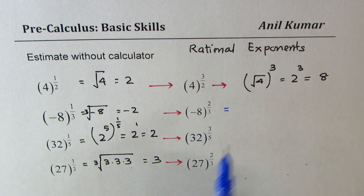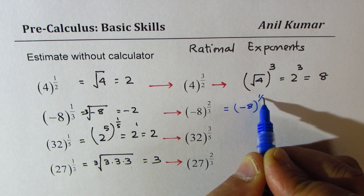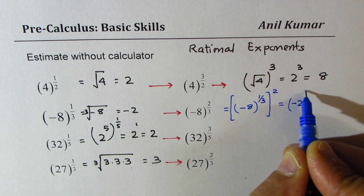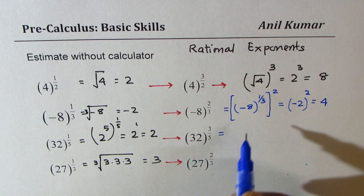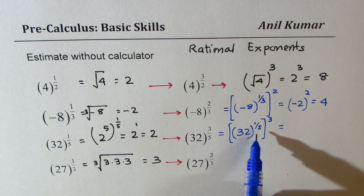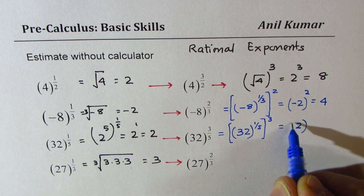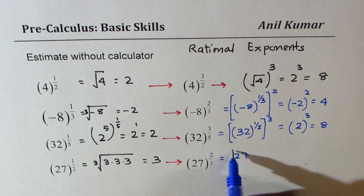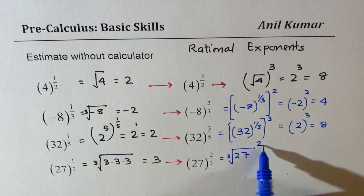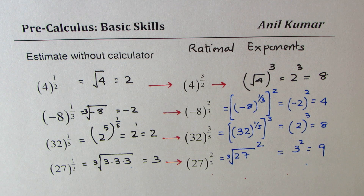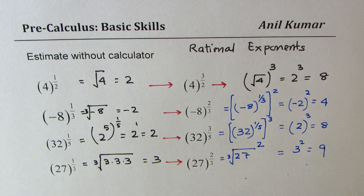You could also write minus 8 to the power of 2 over 3 as minus 8 to the power of 1 over 3, whole squared. Minus 8 to the power of 1 over 3 is minus 2, and the square of minus 2 is plus 4. Similarly, 32 to the power of 1 over 5 is 2, and cubing gives 8. For 27 to the power of 2 over 3, take the cube root of 27 which is 3, then square it to get 9. Rational exponents can be tricky, so breaking them into steps makes it easier.